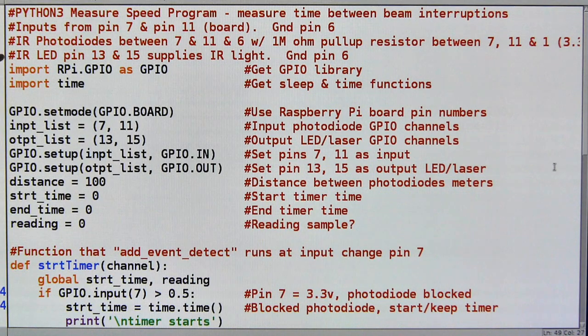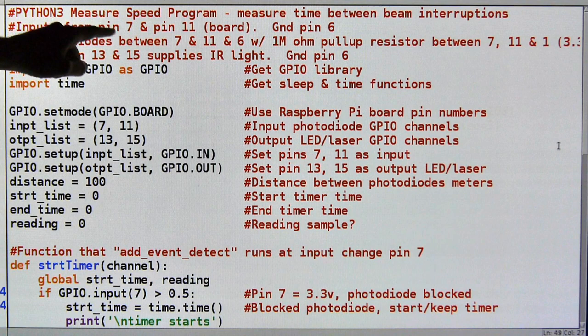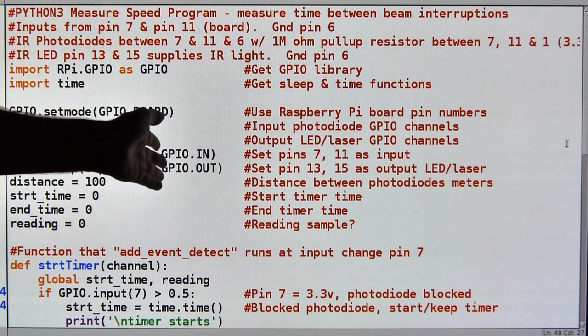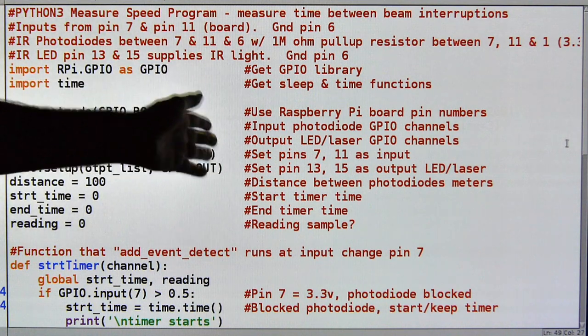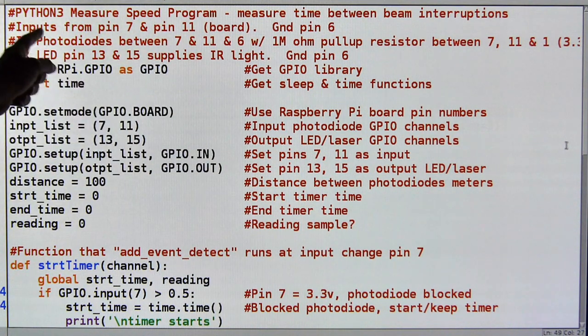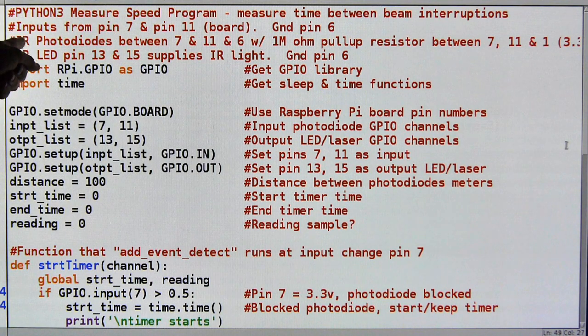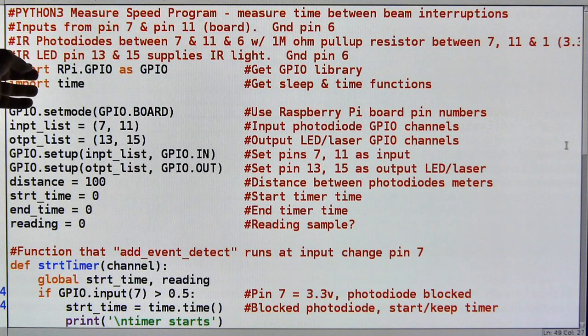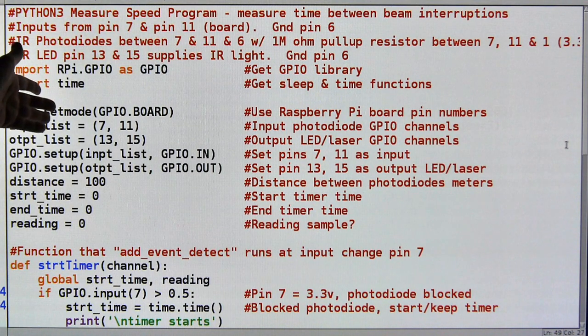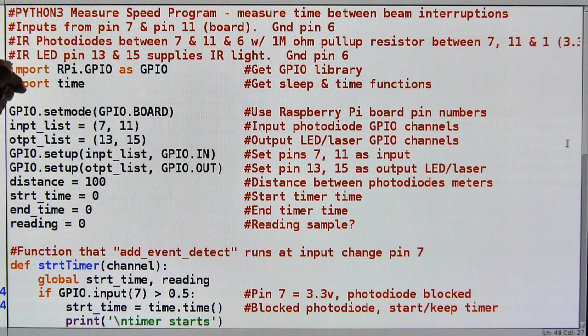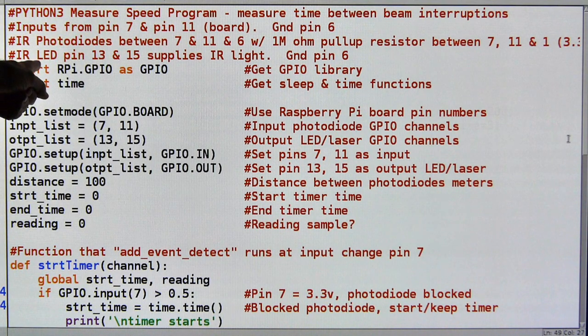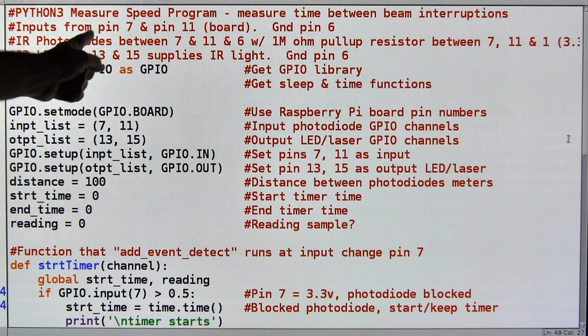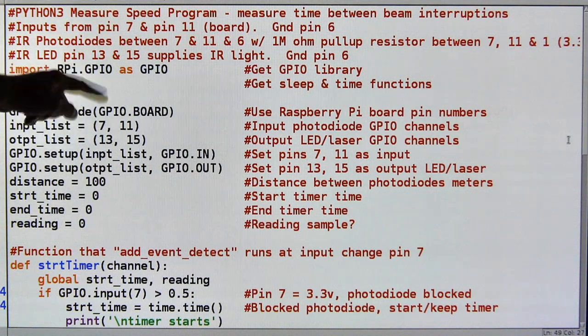This is the software behind the hardware. And it's just a program to measure speed. It's going to measure between two beam interrupts. I cheated a little bit. I used one hardware switch and one beam interrupt just because I didn't have the hardware. Very similar setups though. And my inputs are from pin 7 and pin 11. Those are using board numberings. I'm using pin 6 as ground numbering. If you saw my other videos. Very similar stuff. And the infrared LEDs are meant to be powered from pin 13 and 15. Obviously the switch doesn't need that. But I'm using one of them for the infrared diode.